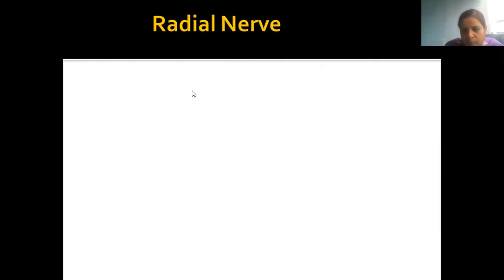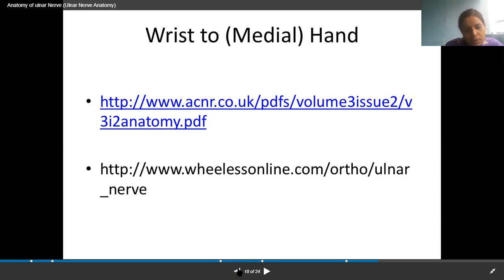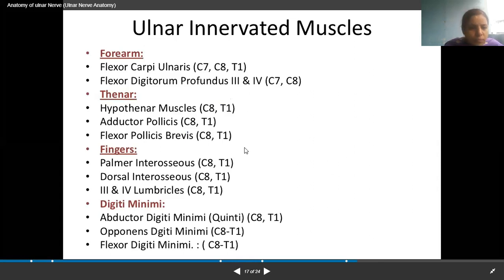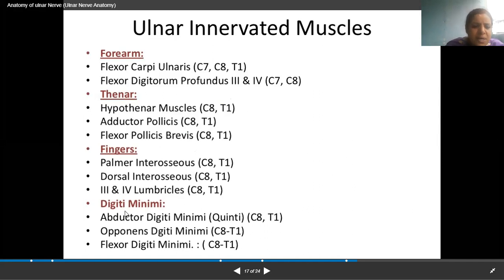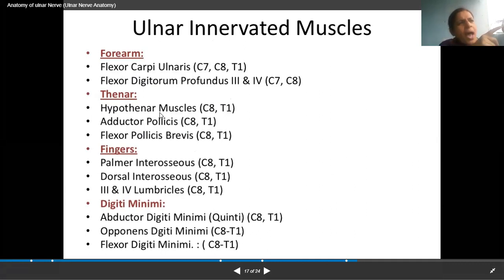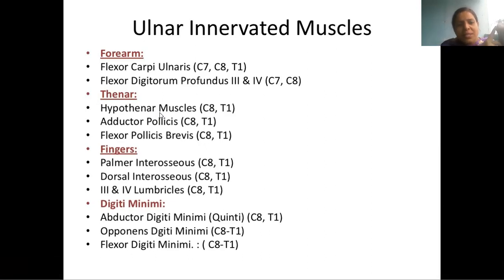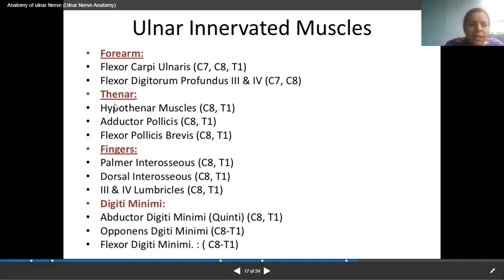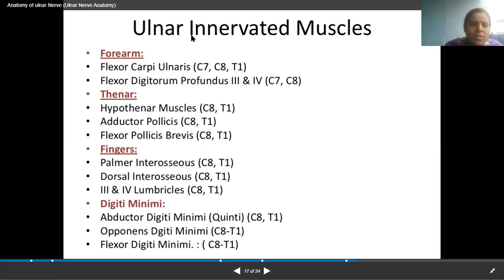Here is the list of muscles supplied by the ulnar nerve. In the forearm: flexor carpi ulnaris and flexor digitorum profundus. In the hypothenar group: abductor digiti minimi, flexor digiti minimi, and opponens digiti minimi. In the thenar group, the two exceptions supplied by ulnar nerve are adductor pollicis and flexor pollicis brevis. Also: four dorsal interossei, four palmar interossei, and the third and fourth lumbricals are supplied by the ulnar nerve.